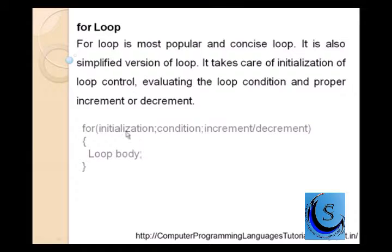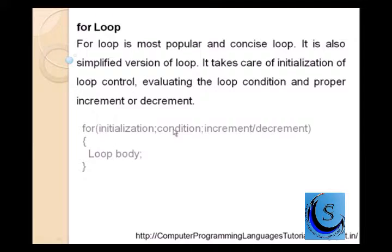Like a while loop, the for loop also starts working from initialization, then checks the condition. If it is true, then there is increment or decrement depending on the logic. This whole body gets executed till the condition is true. Once the condition is false, the body of the loop gets terminated.